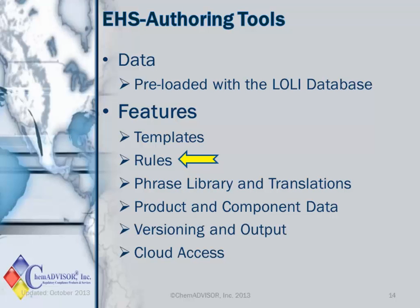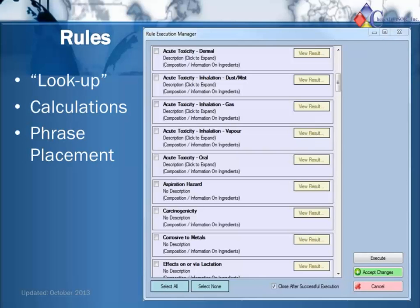Now let's move to rules. Rules are a very powerful tool in EHSAT, allowing the system to populate many sections of the document for the user, providing efficient and repeatable document creation. Rules may function to look up data based on the individual components, such as occupational exposure limits that you see in Section 8 of an SDS. Rules may perform calculations based on product and component data to classify a material, say for GHS or under WHMIS. Or, based on the information from lookups or calculations, the rules may populate sections of the SDS with phrase text, such as hazard statements in Section 2 or first aid statements in Section 4.